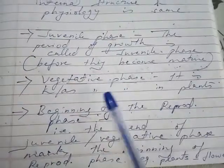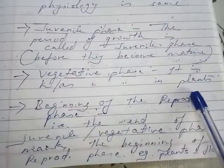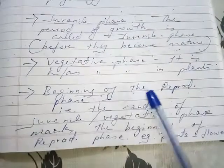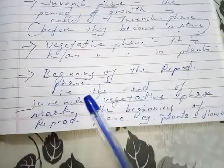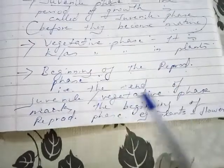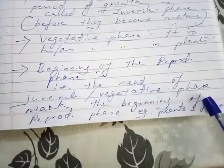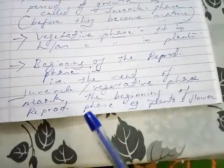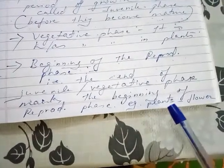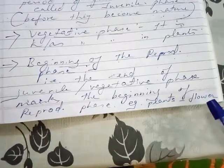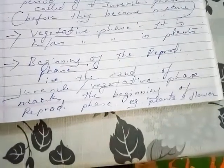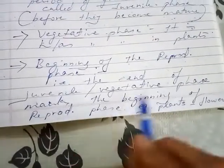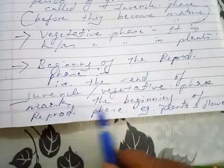In plants, the juvenile phase is known as the vegetative phase. The end of the juvenile or vegetative phase marks the beginning of the reproductive phase. For example, in plants they start flowering — this is called the reproductive phase.